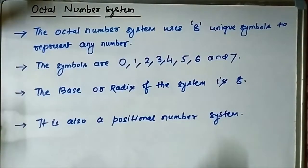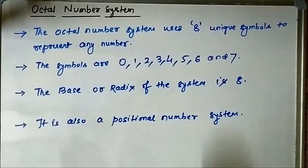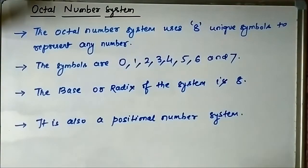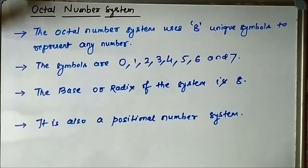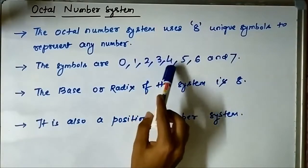By the term 'octal' you can make out that it has something associated with the number 8. The octal number system is a code which consists of some unique symbols used to represent any given number. It uses 8 unique symbols. The binary system uses 2 symbols, the decimal system uses 10 symbols, and the octal number system uses 8 unique symbols: 0, 1, 2, 3, 4, 5, 6, and 7.